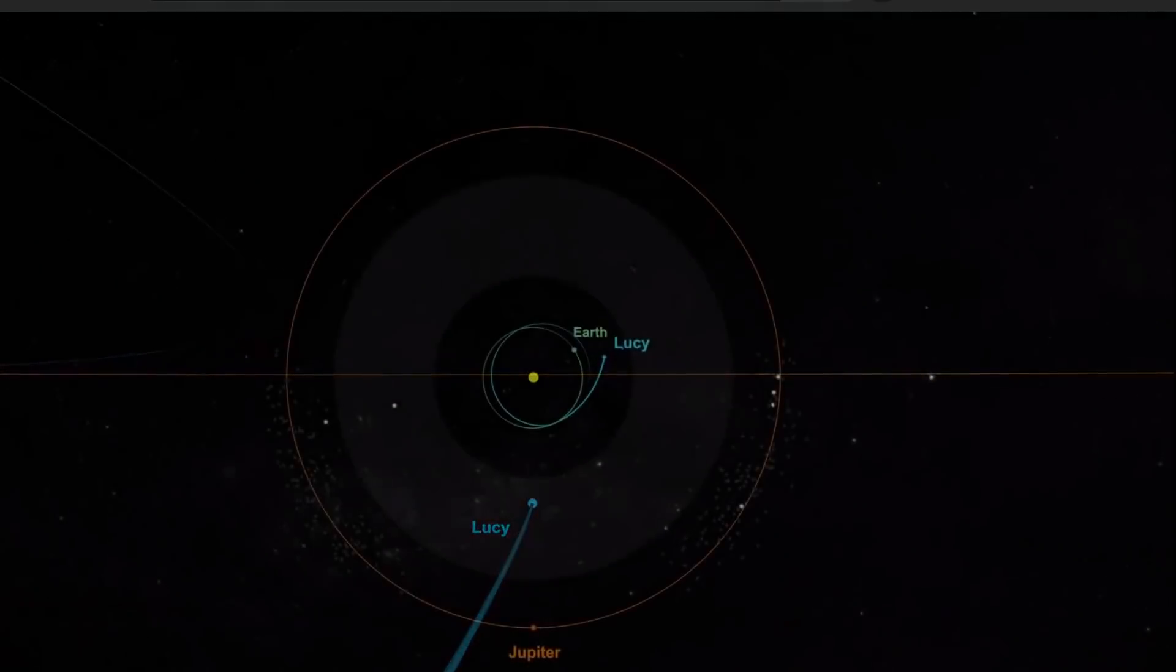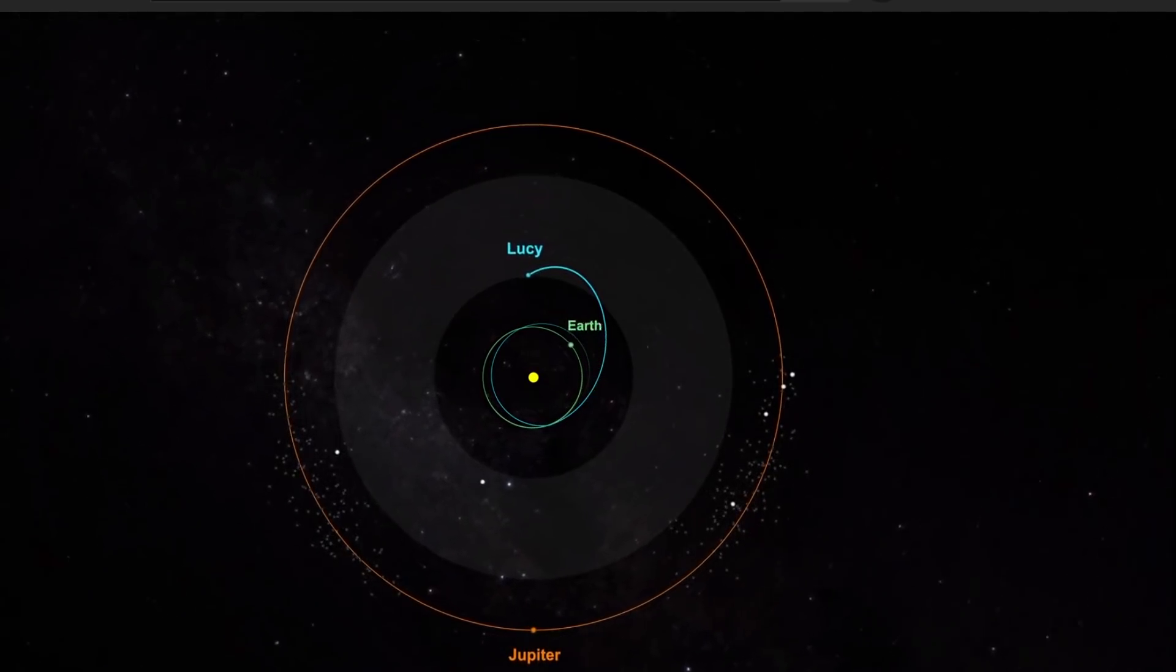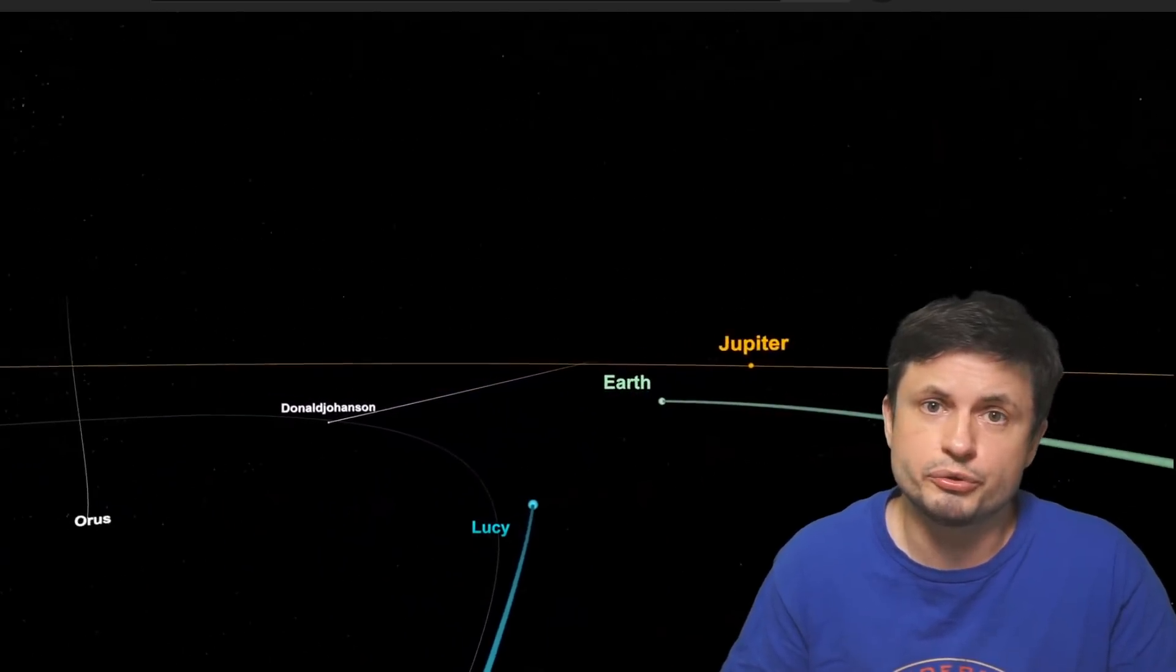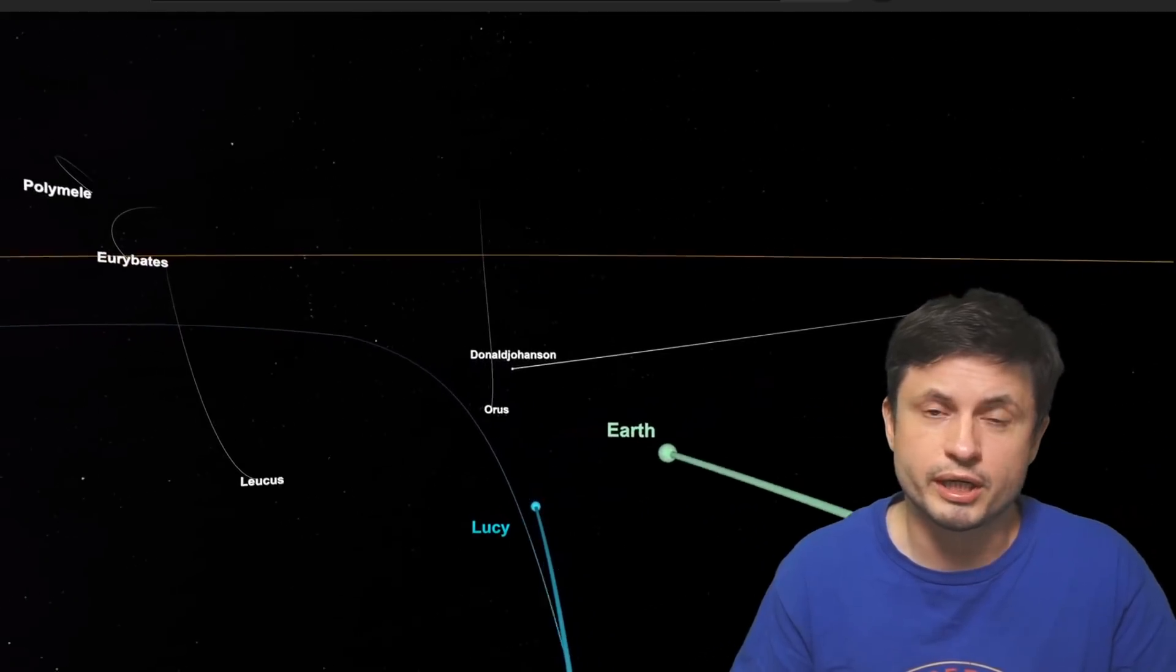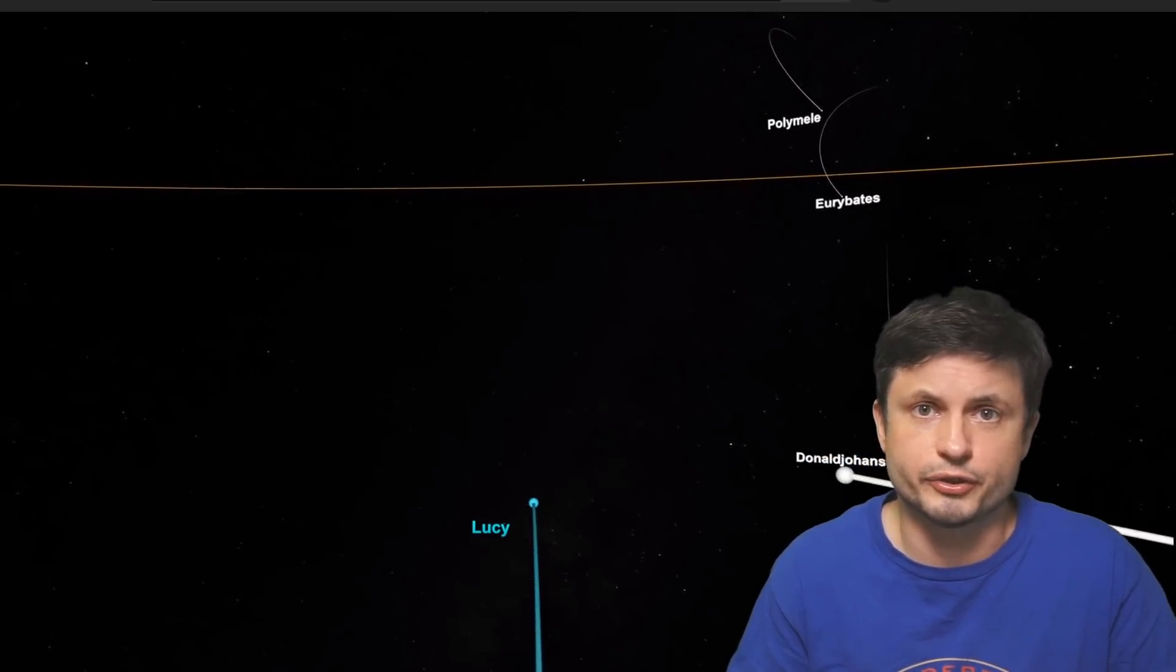It's going to do so once in 2022, another time in 2024, and then it's going to come back to Earth in 2031 as well. So this entire mission is going to be using an extremely complex maneuver and is going to barely use any fuel at all simply because of the way that this mission is executed.